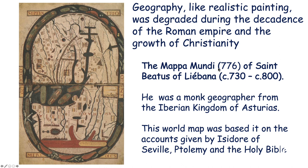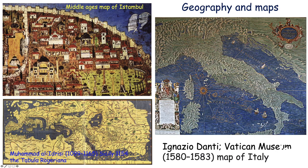This Mappa Mundi from 776 CE by Saint Beatus of Liébana — a monk geographer in the Iberian kingdom of Asturias — was based on accounts given by Isidore of Seville, Ptolemy, and the Holy Bible. You can see the Mediterranean, Egypt with the river Nile, possibly Italy, possibly Greece — but you can see how simplistic and fundamentally incomplete these maps were in the very middle of the Christian period.